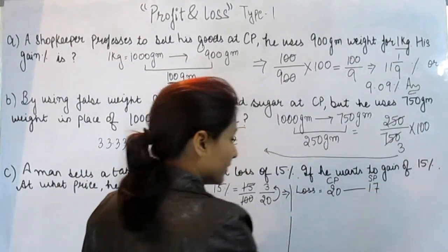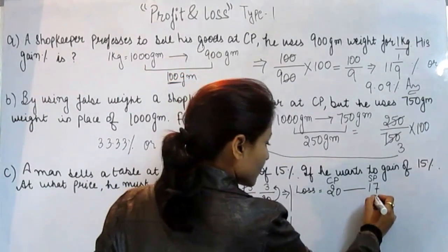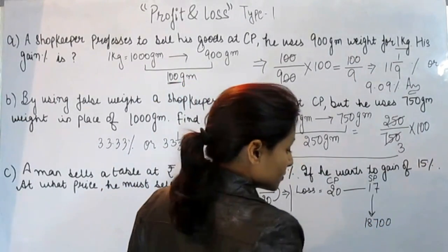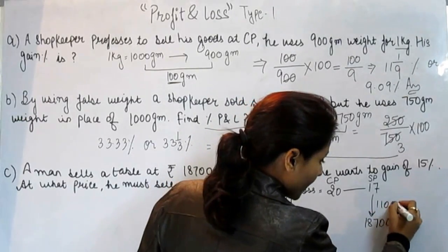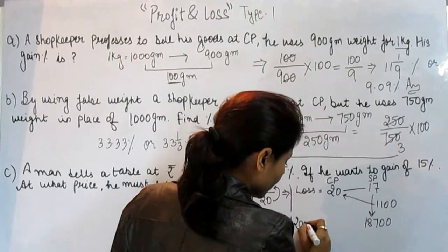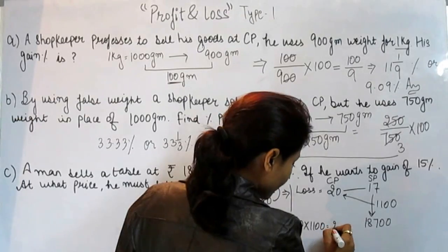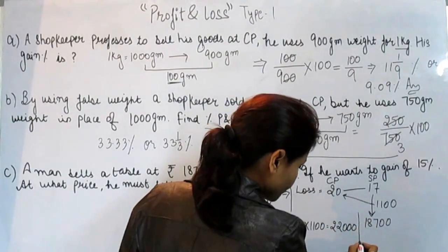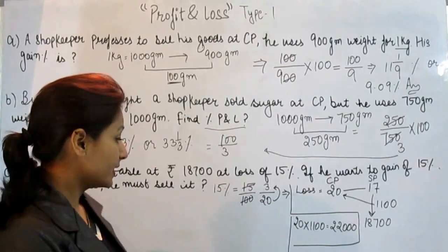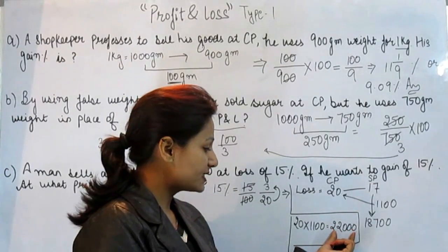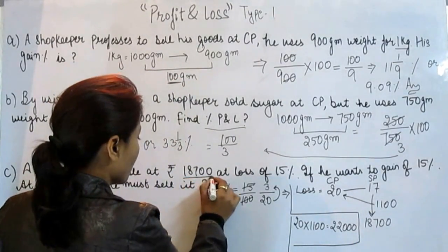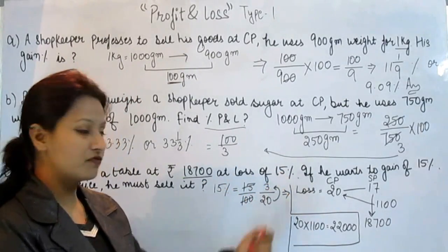The SP is 17 but what we are given is 18,700. And 18,700 is 1100 times 17. So now multiply 20 with 1100, that is 22,000. It means he purchased that table at rupees 22,000 and he sold that table at rupees 18,700 at loss of 15%. But